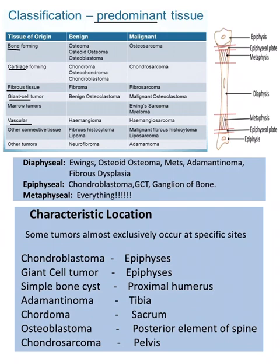If we talk about benign bone-forming tumors: osteoma, osteoid osteoma, and osteoblastoma. If malignant — osteosarcoma; the name 'sarcoma' indicates malignancy. For cartilage-forming tumors: if the name contains 'sarcoma' it is malignant; if it ends in 'oma' — osteochondroma, chondroblastoma, chondroma — it is benign. For fibrous tissue: benign is fibroma, malignant is fibrosarcoma. Ewing sarcoma is a malignant tumor.